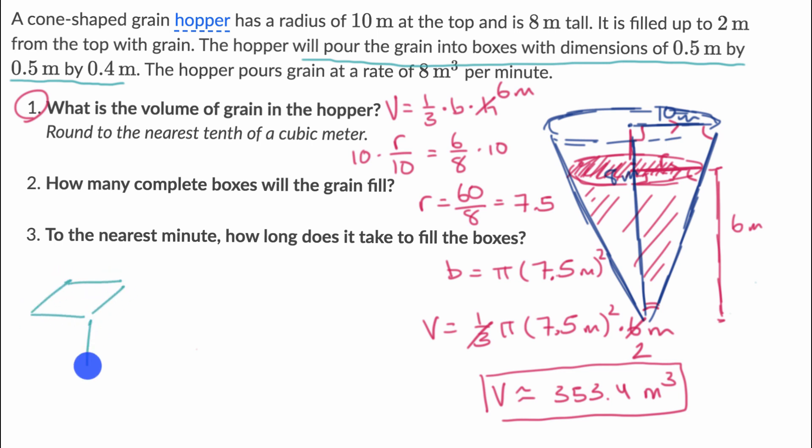And they are 0.5 meters by 0.5 meters by 0.4 meters. So the volume of each box is just going to be the product of these three numbers. So the volume of each box is going to be the width times the depth times the height. So 0.5 meters times 0.5 meters times 0.4 meters.